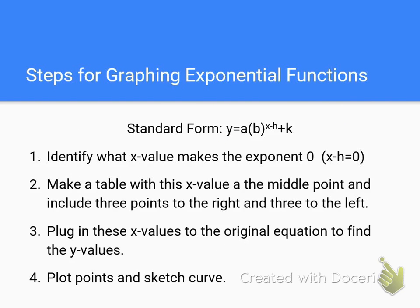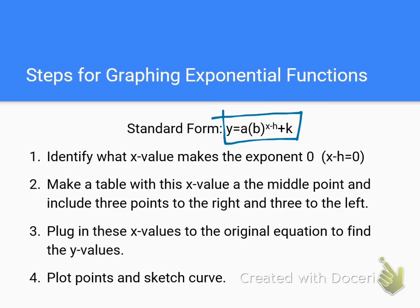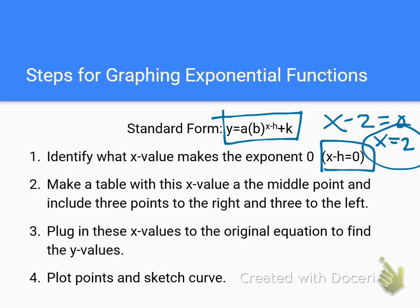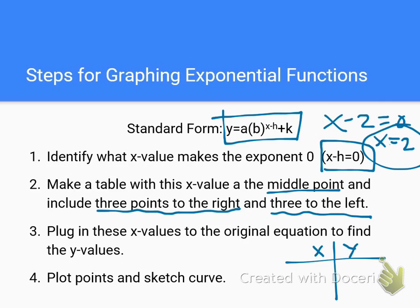Here are the steps for graphing exponential functions. This is the standard form. The first thing we do is identify which x-value makes the exponent 0 — look at x minus h and set it equal to 0. For example, if we had x minus 2, then x equals 2 is a critical point where the exponent equals 0. Use that as the middle point on the table, and go 3 points to the right and 3 points to the left. Then plug in those x-values to the original equation to find the y-values, plot the points, and sketch the curve.